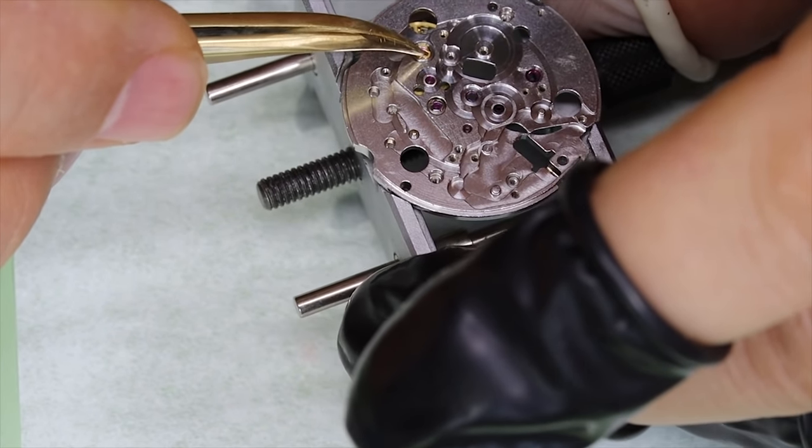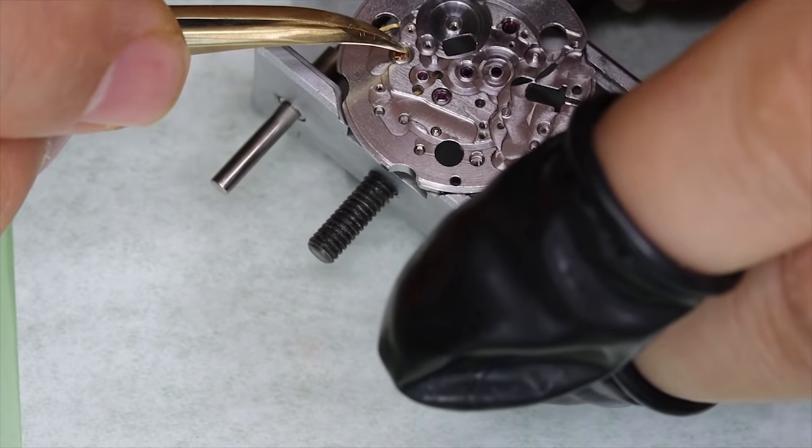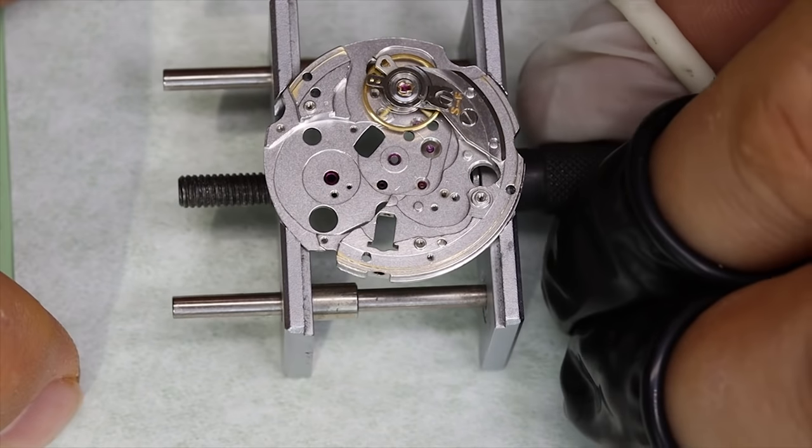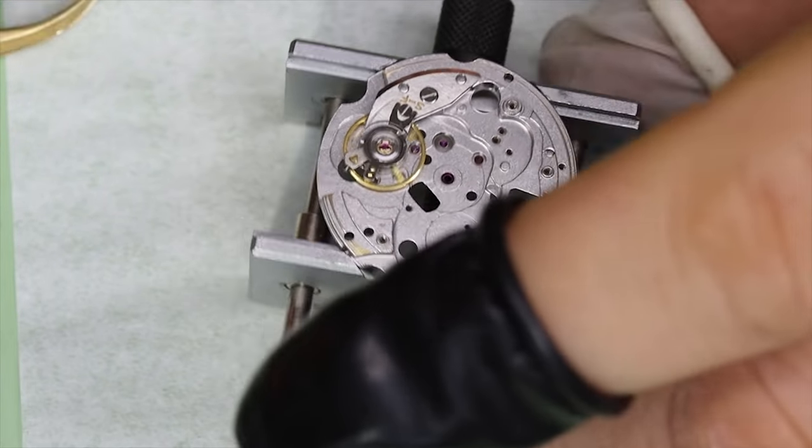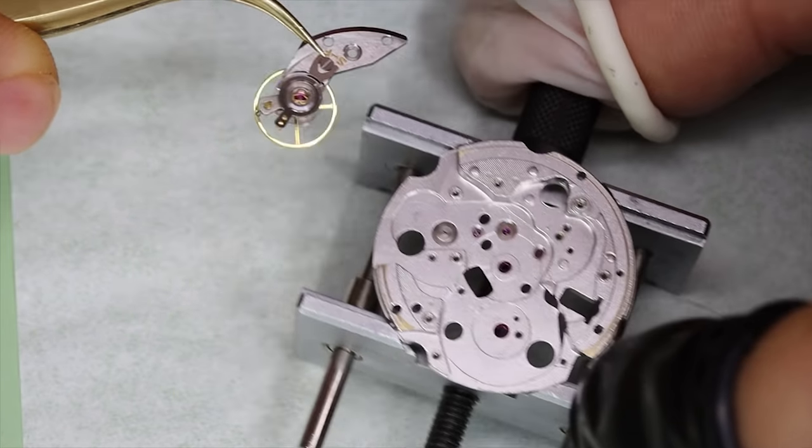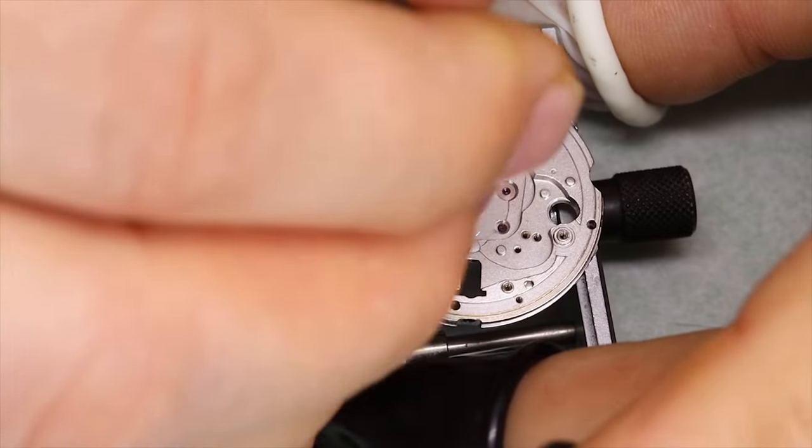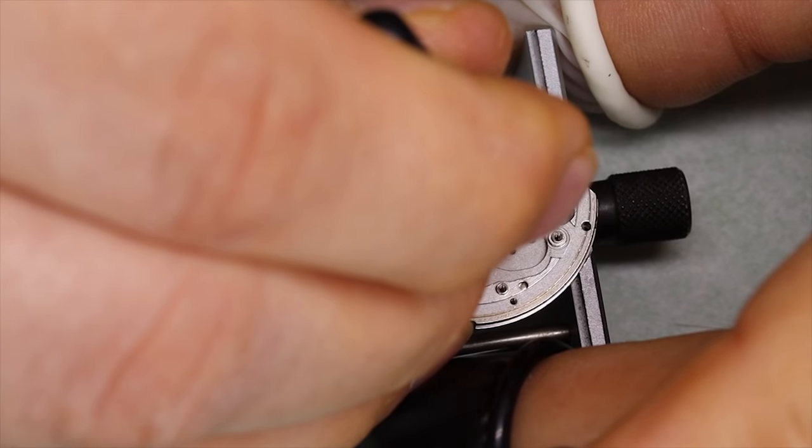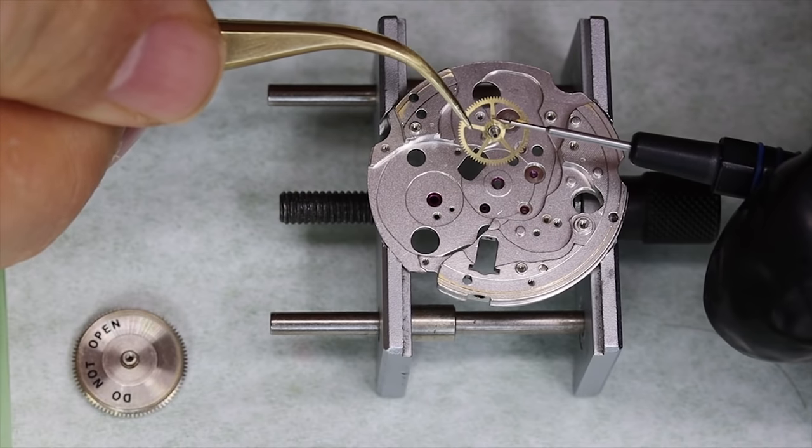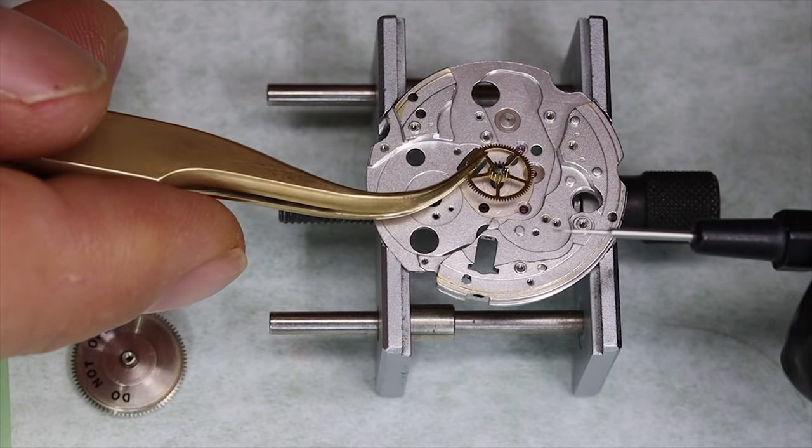Now while we do this, we can get back to our discussion on the beat rate. So we talked about wear being the main negative point about 36,000 movements. It's a little bit of a common misconception that the wheels rotate twice as fast - not really sure where that came from, but that's of course not the case. Basically the center wheel will always rotate one time per hour, and typically the fourth wheel will rotate once per minute. But what will really rotate much faster is the pallet fork and the balance and also the escape wheel. So the main thing to keep in mind is that the escapement will have a much higher rotational speed.